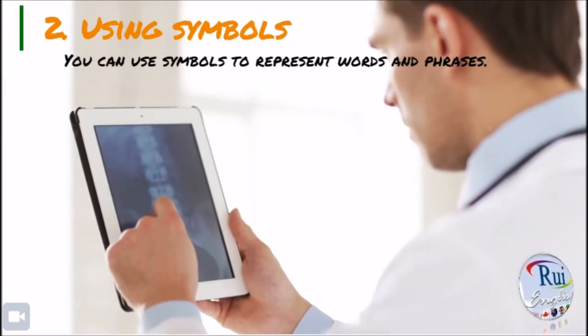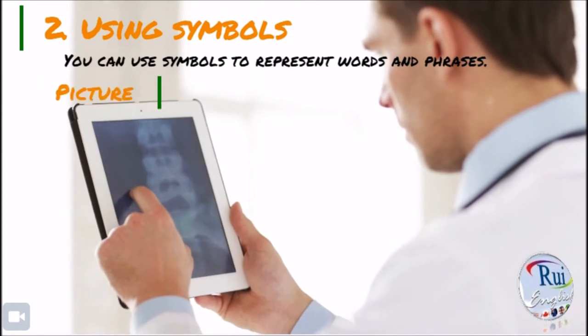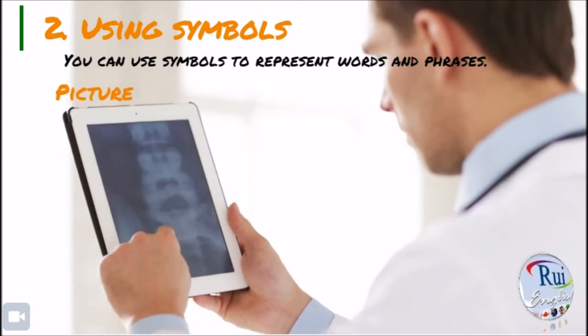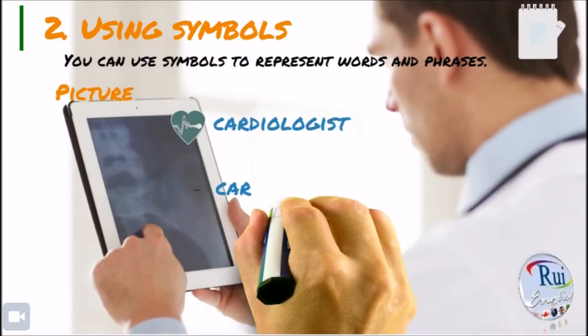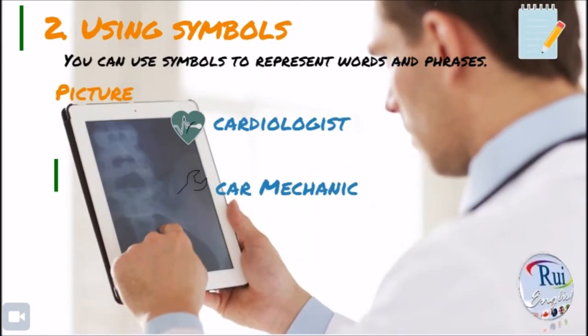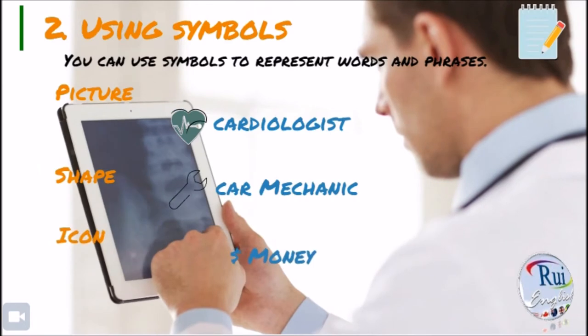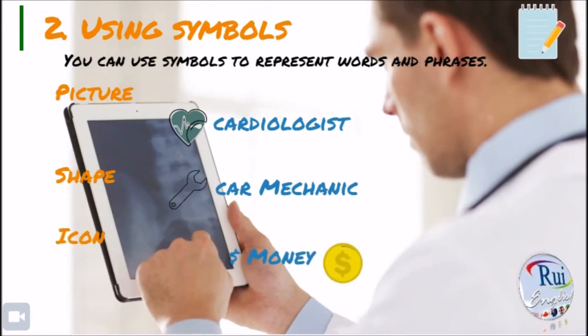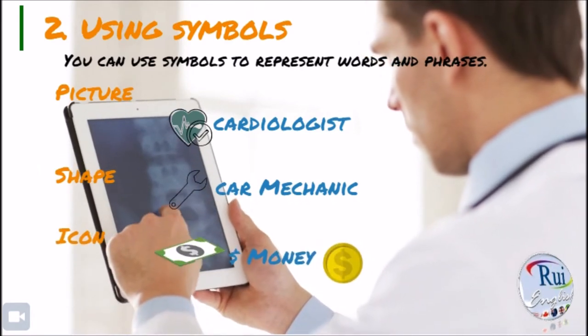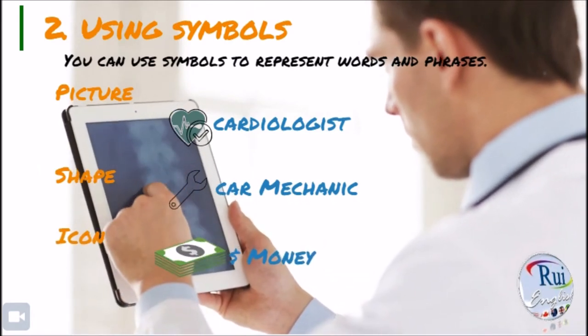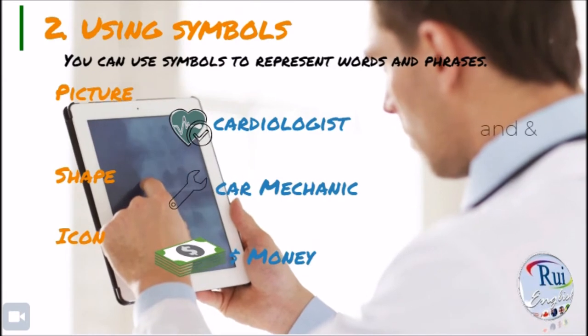You can use symbols to represent words and phrases — a picture, a shape, or an icon. The dollar sign represents money. Another common symbol is an arrow facing up, which represents an increase.